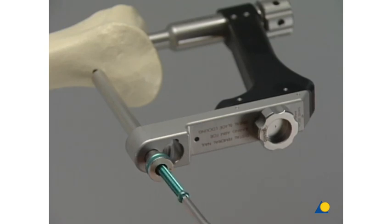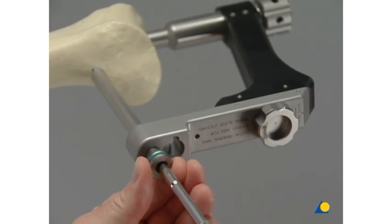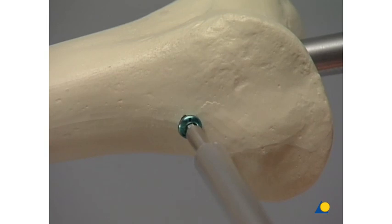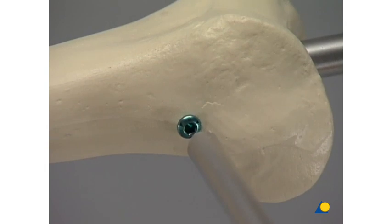The locking screw is inserted through the protection sleeve using the hexagonal screwdriver and screwed into the bone until the head of the screw touches the lateral cortex. Then the protection sleeve is removed.